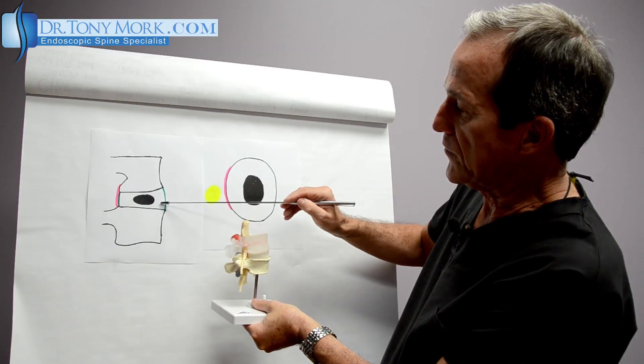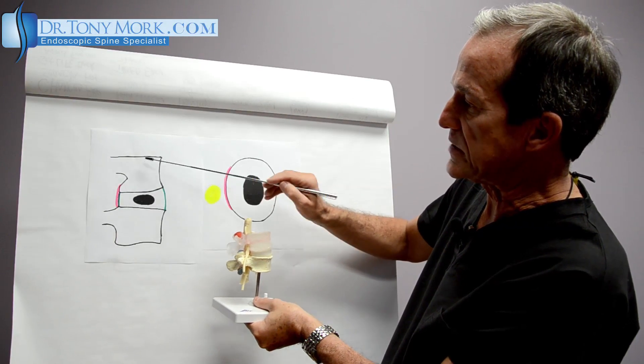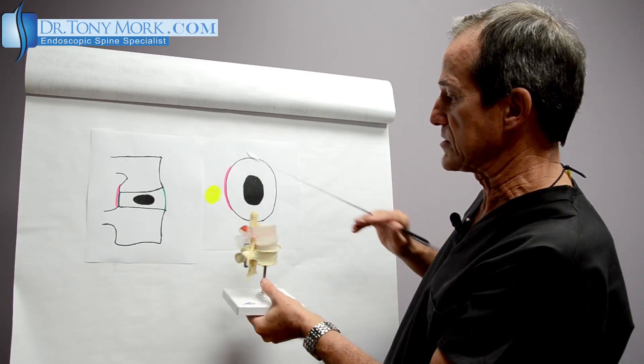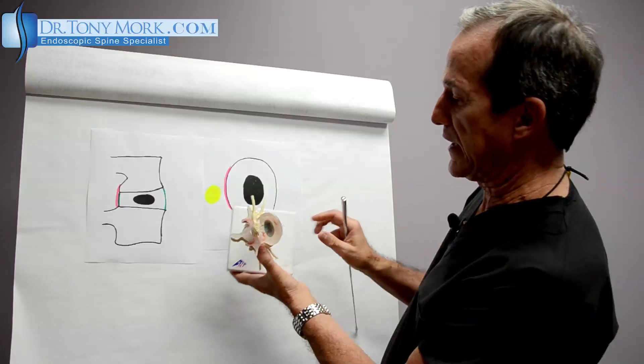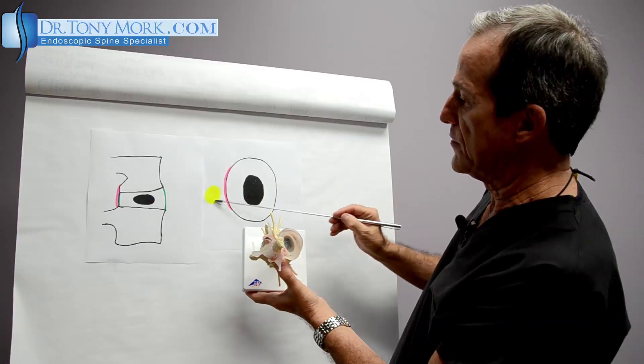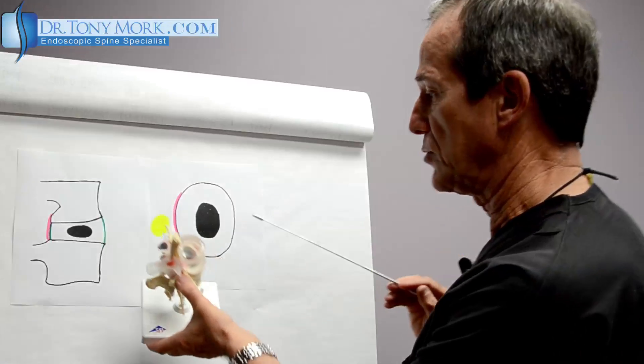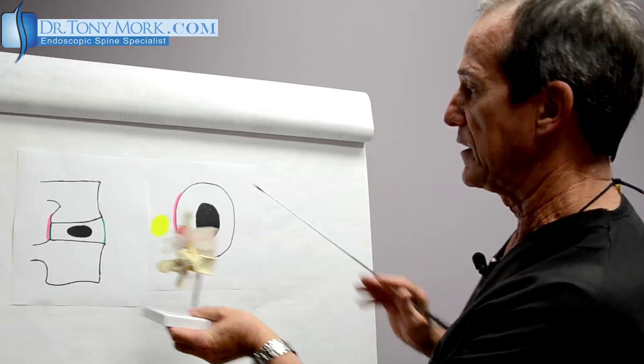In the model here, this will be represented as the disc. These are the vertebrae above and below. And this is looking at it as though you'd be looking at it on its side like this. This represents the spinal cord which is right here. Okay, so we've got the orientation here. Let's take a look.